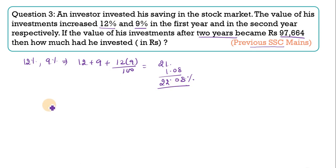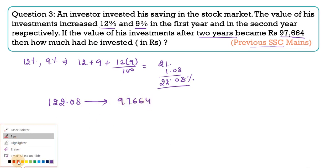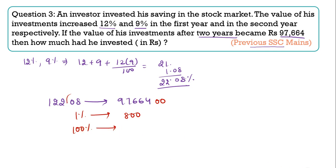My principle is always 100. So from here, my amount will be 122.08, and its value has been given to me as 97,664. Now if I simplify this, I will get 1% value. So 1% will be equal to 800. Just remove the decimal, zeros will go. So 1% is 800. From here, 100% can be easily found, that is 80,000. And this is your answer. This is your answer.